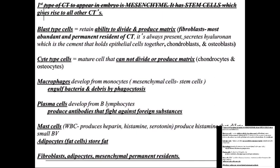When you see 'chondro,' you're thinking cartilage — so there are chondroblasts. 'Osteo' means bone — osteoblasts. Then there are mature cells that end in the word 'cyte,' like chondrocyte or osteocyte. These are mature cells and they can't divide or produce matrix.